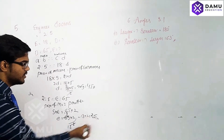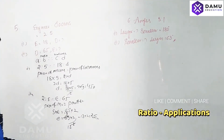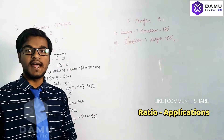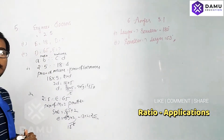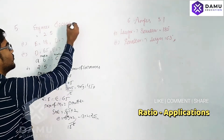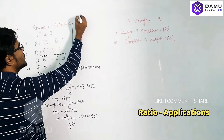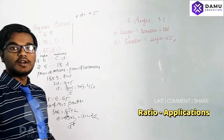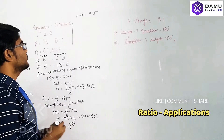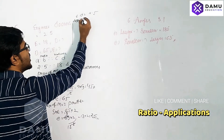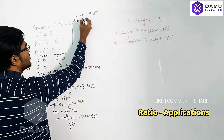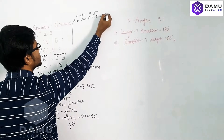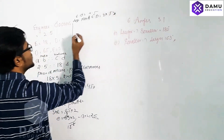So the number of engineers will be 26. Now for the other method: we take the ratio engineers to doctors as 2 is to 5. Let the number of engineers and doctors be 2x and 5x respectively.